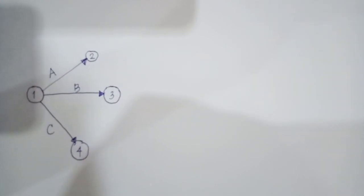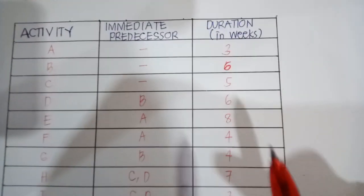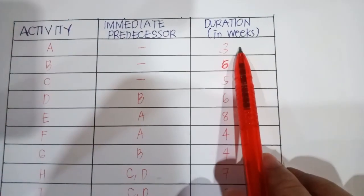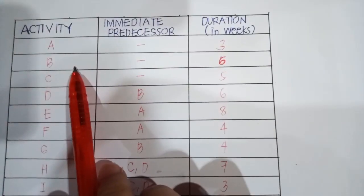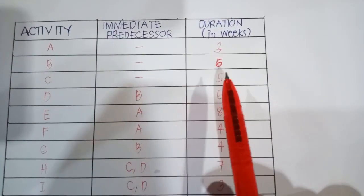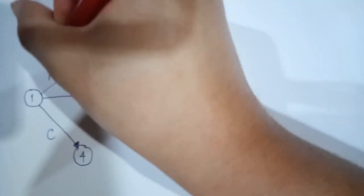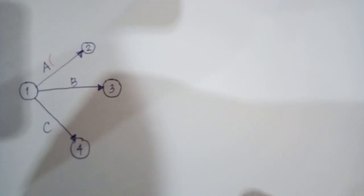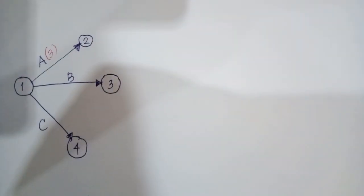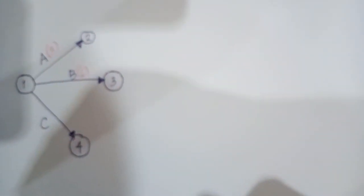Going back to our tabulation: activity A has a duration of 3 weeks, activity B has a duration of 6 weeks, and activity C has a duration of 5 weeks. So on our network diagram, activity A is labeled 3 weeks, activity B is labeled 6 weeks, and activity C is labeled 5 weeks.